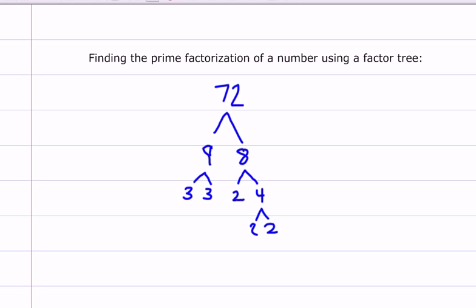So now I have all prime numbers. This tells me that I have the longest possible factor string of 72, and they are prime numbers, so this is the prime factorization.